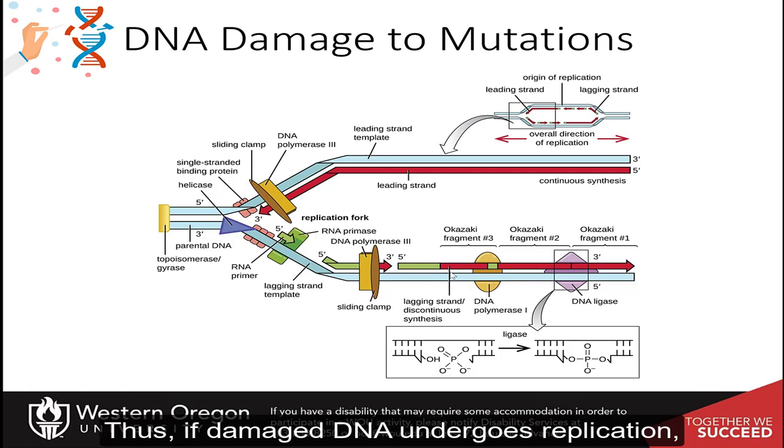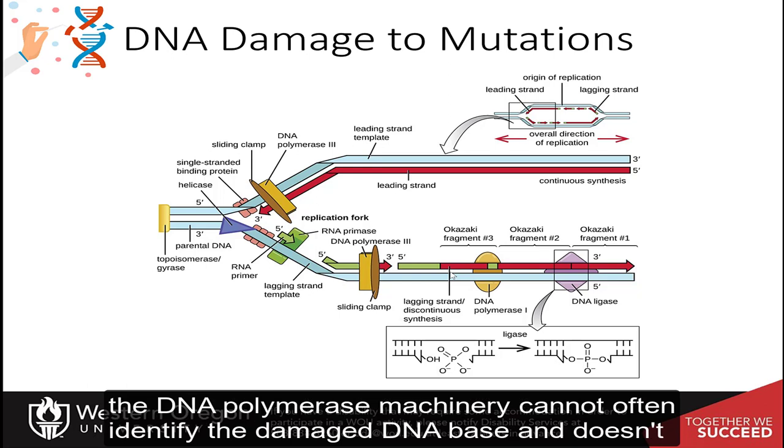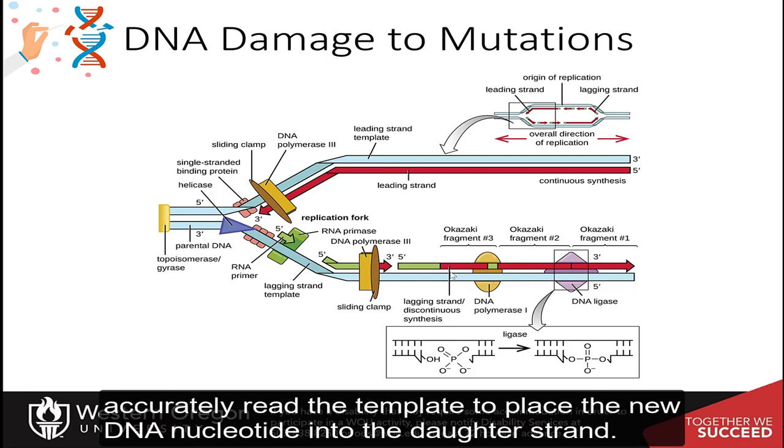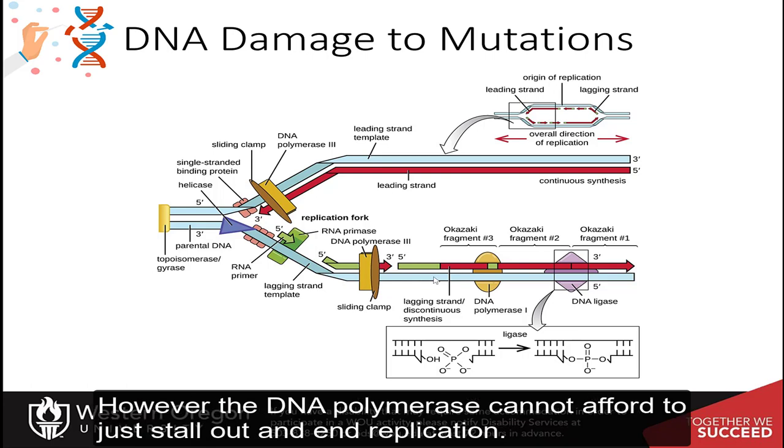Thus, if damaged DNA undergoes replication, the DNA polymerase machinery cannot often identify the damaged DNA base and doesn't accurately read the template to place the new DNA nucleotide into the daughter strand. However, the DNA polymerase cannot afford to just stall out and end replication.